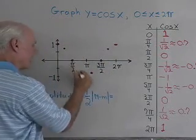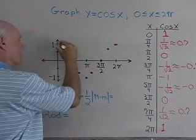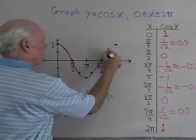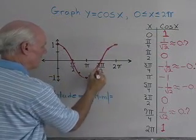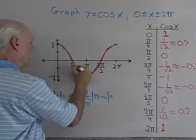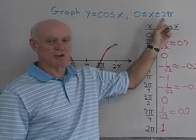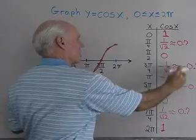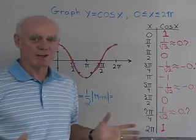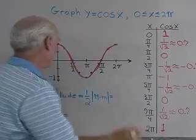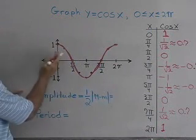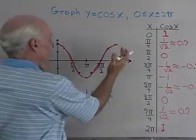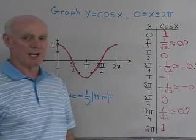If I did even more subdivisions — like pi over eight — and found the corresponding y values, they would fall in line with these points. So I'm just going to connect these with a nice smooth curve. This is the graph of one complete cycle of y equals cosine x for x between zero and two pi. After this, the cosine curve just repeats — it comes back down and goes back up again in both directions.